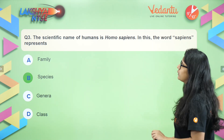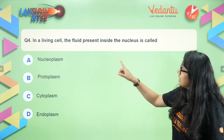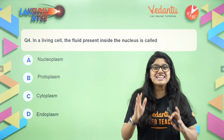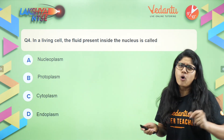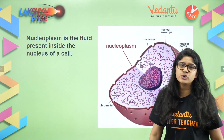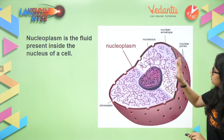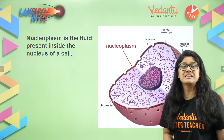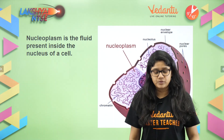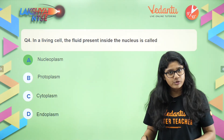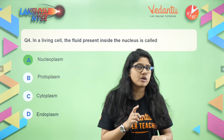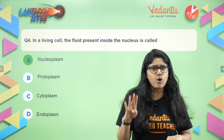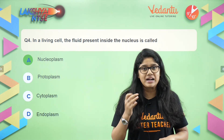Question number four. In a living cell, the fluid present inside the nucleus is called what? Such an easy question — the answer is nucleoplasm. We have the nucleus, inside we have the nucleolus, and the whole fluid inside is called nucleoplasm. The right answer is option A. Do write in the comment section how many marks you have scored so far — one mark per question, so four marks by question four.